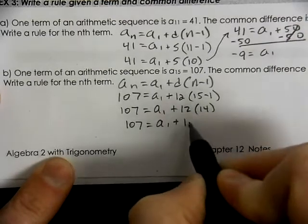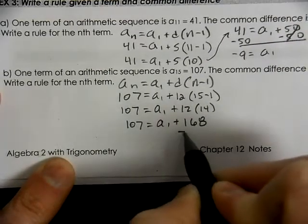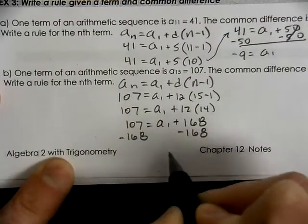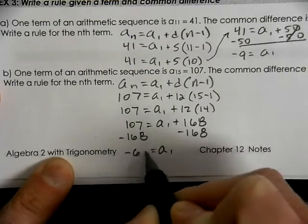And when we multiply this out we get 168. Subtract the 168 over. And our a of 1 is going to be negative 61.